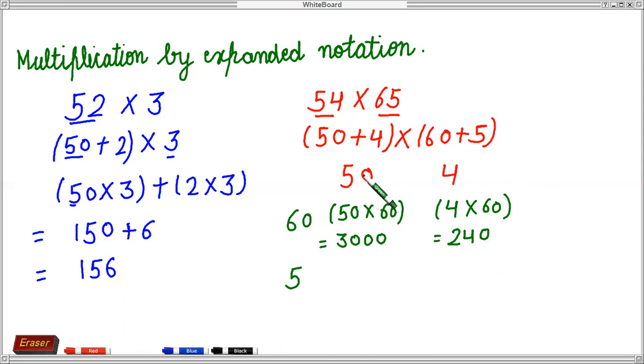Now we have to remember as it was 50 plus 4. So whatever the product has come, 3240, this we have to add it. So 3000 plus 240, it will be 3240.